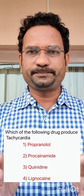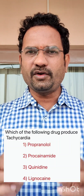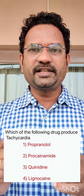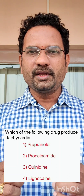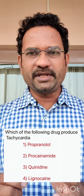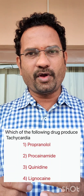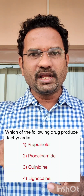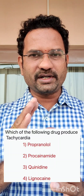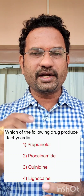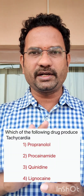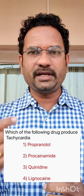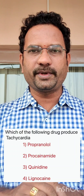Now, all of these options are cardiovascular drugs used to treat arrhythmia. Propranolol is a beta blocker. When beta receptors on the heart are blocked, it reduces force of contraction of the heart and reduces heart rate — both negative chronotropy and negative inotropy.